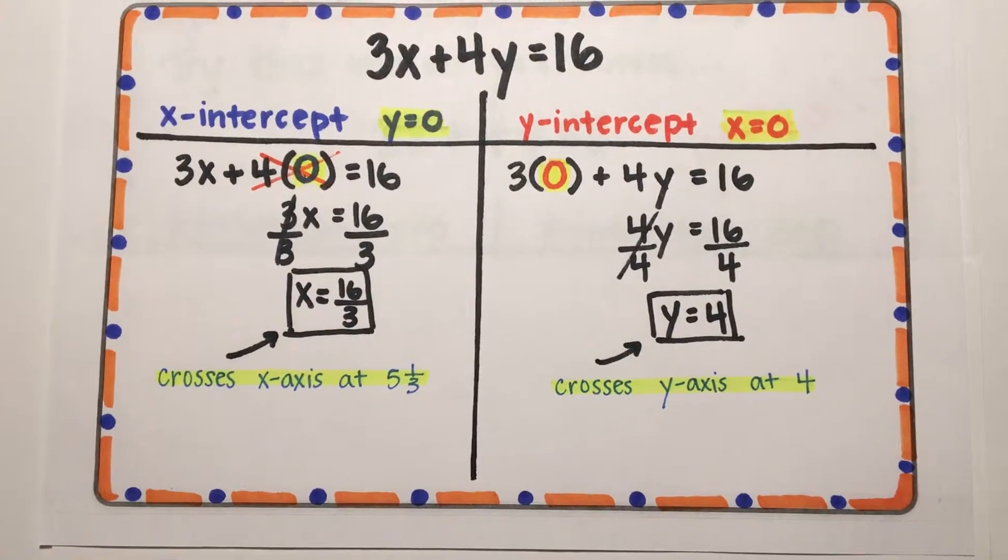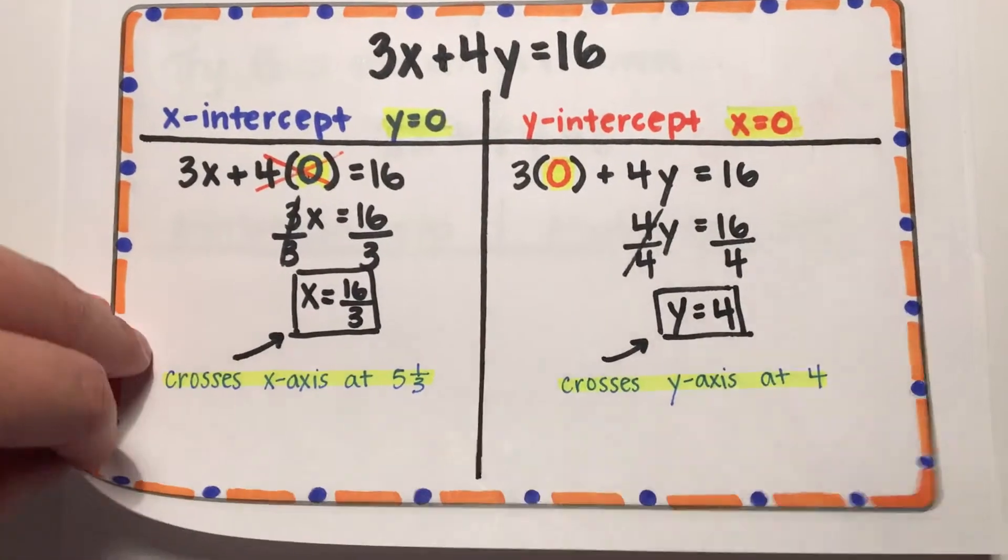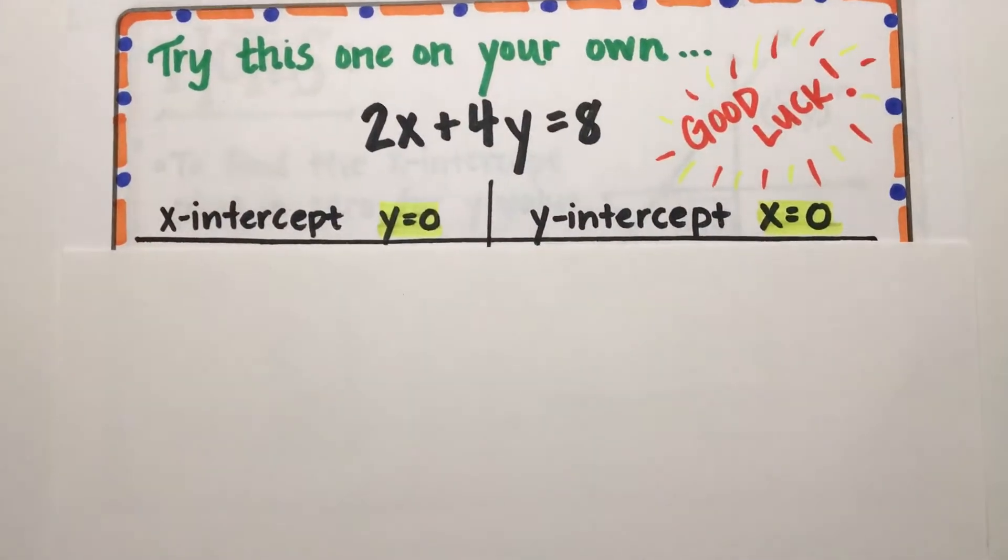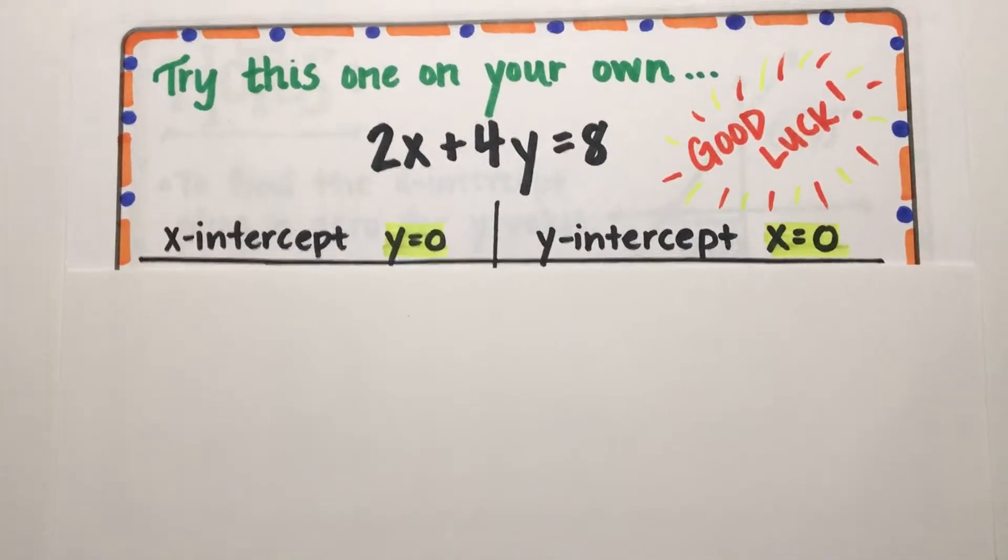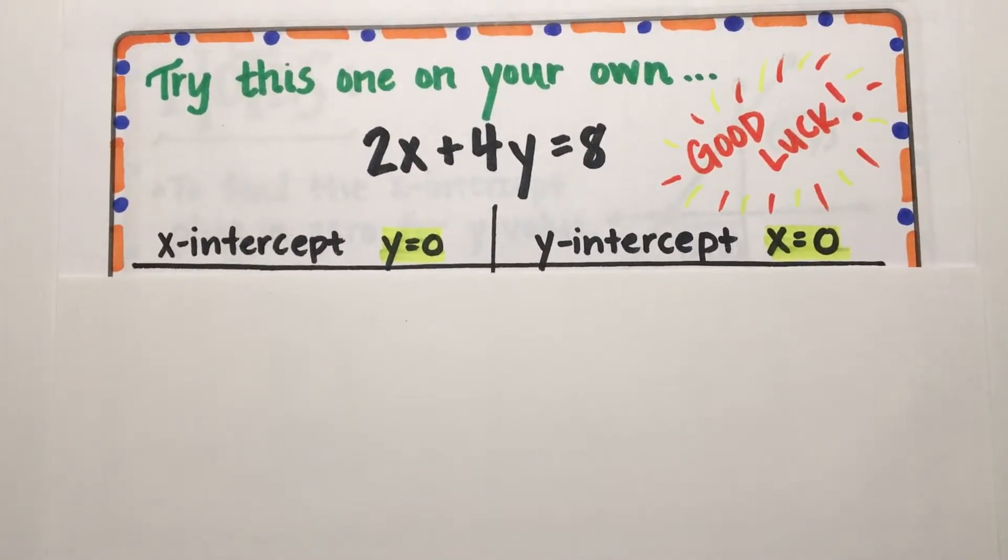Plot these two points on your graph, and you're done. Now it's your turn. Find the x and y-intercept of the equation of a line. Pause the video until you're done.